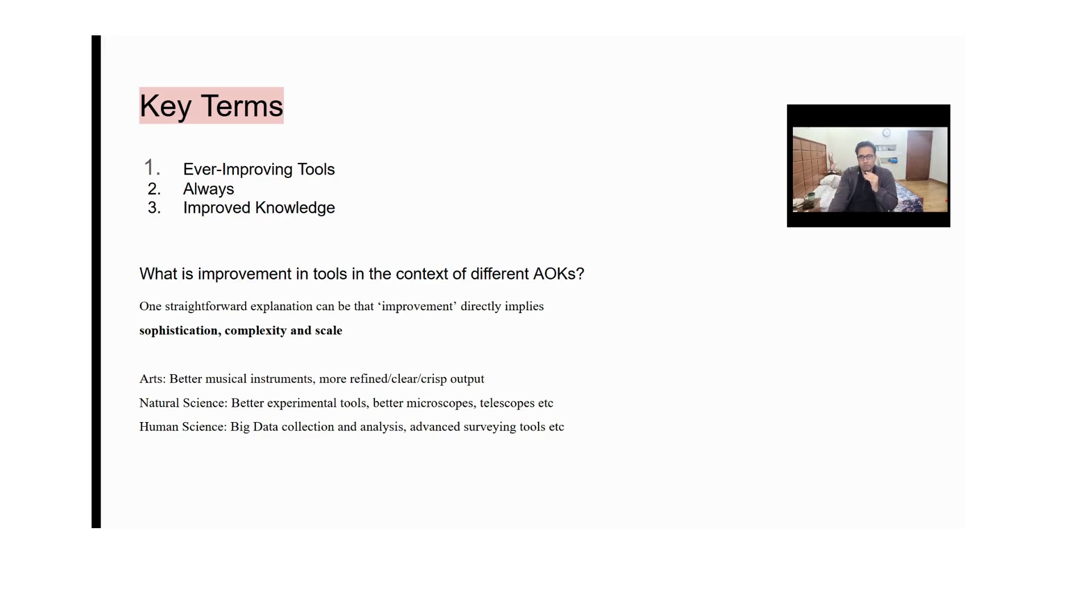You need to consider that in natural sciences when we talk about the different tools that are involved, natural sciences tools are used to conduct experiments and better tools allow us to explore the natural world in more depth, in more accuracy. Since we are exploring the natural world and we are limited by our sense perception, it's very easy to claim that better tools allow us to observe the natural world in a better way.